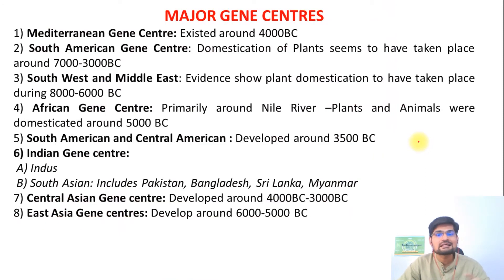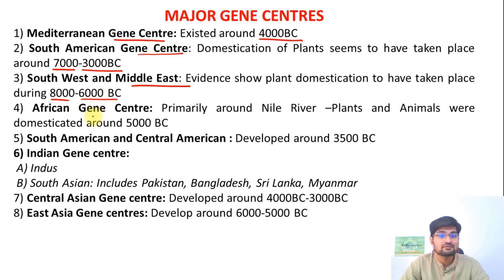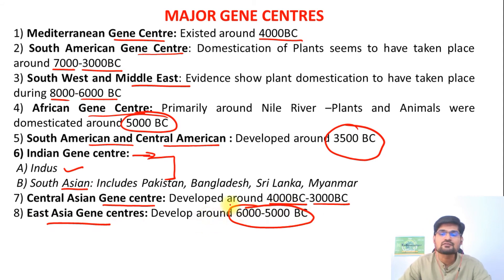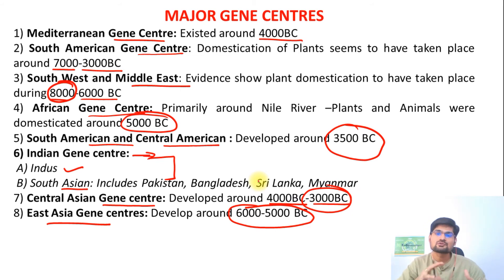Here is a list of major gene pool centers with their time periods: Mediterranean gene pool center around 4,000 BC; Southern American gene pool center 7,000–3,000 BC; Southwest and Middle East 8,000–6,000 BC; African gene pool center about 5,000 BC; South and Central American area 3,500 BC; Indian gene pool center in the Indus and South Asian part from 3,500 BC onwards; Central Asia gene pool center 4,000–3,000 BC; and East Asia 6,000–5,000 BC. Most major gene pool centers existed in the range of 8,000 to 3,000 BC, and cultivated plants spread across the world through traders, wars, conquests, and expansions.